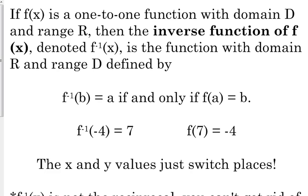If you have f(x) being a one-to-one function with domain d and range r, then the inverse function uses this notation: f with a negative one as an exponent of x — that is the inverse notation. Now, that is not truly an exponent; you can't move the negative one to the denominator because it's not an exponent. That is function notation for the inverse function. Notice that the inverse has a domain of r and a range of d — because we're switching all of our x's and y's.